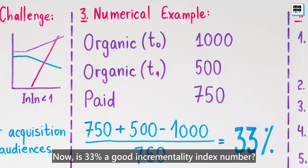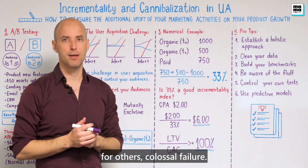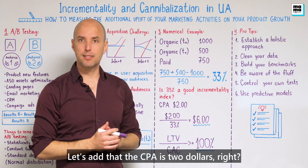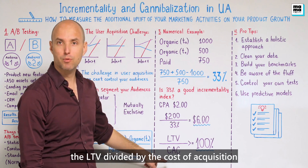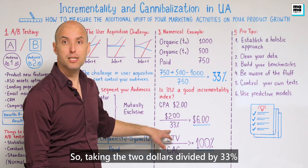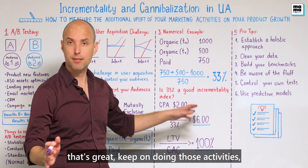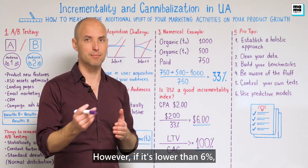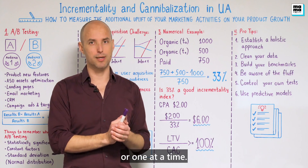Is 33% a good incrementality index? That depends — for some companies it would be an amazing success, for others a failure. But if you want to make sure you're not cheating yourself, let's do further calculation. If the CPA is $2, and going back to basics you want LTV divided by cost of acquisition to be 100% or higher, then $2 divided by 33% gives us an effective CPA of $6. If your LTV is higher than $6, keep doing those activities — they are ROI positive. If it's lower than $6, think differently. This is how you calculate incrementality for all your activities.